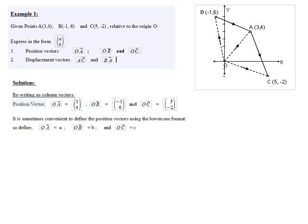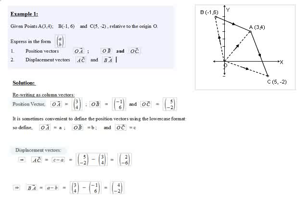A convenient way to visualize this is to rewrite the position vectors using lowercase notation: OA becomes lowercase a, OB becomes lowercase b, and OC becomes lowercase c. This is just for convenience — it's not essential. It simplifies things so that the displacement vector AC can be written as simply c minus a, making it clear that it's the ending position vector minus the beginning position vector. So AC equals c minus a, which gives two over minus six.